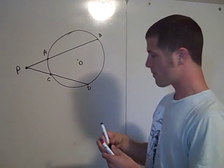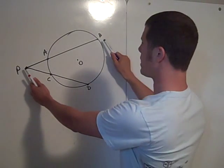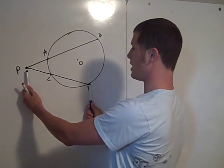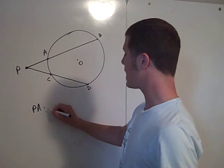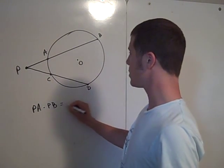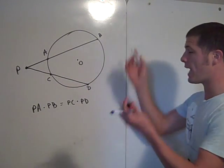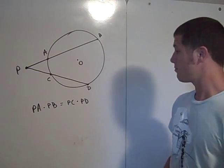Well, then the power of the point P with respect to circle O is PA times PB, which is equal to PC times PD. So, the theorem states PA times PB is equal to PC times PD. This is for any A, B, C, or D, which makes it pretty cool.